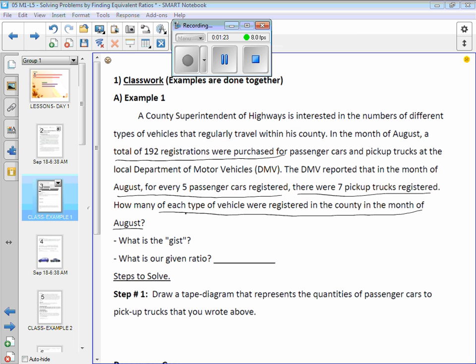How many of you have that? I would also include the how many part. Otherwise that was very nice. Our key piece of information: 192 registrations, for every five passenger cars registered there are seven pickup trucks registered. That's our ratio.